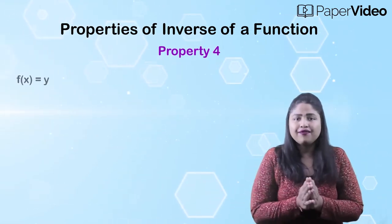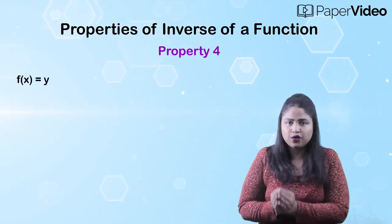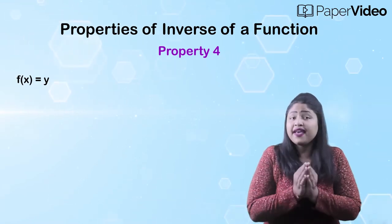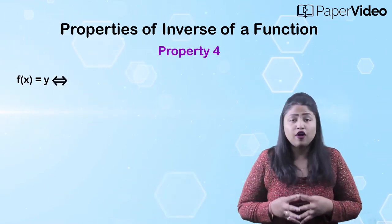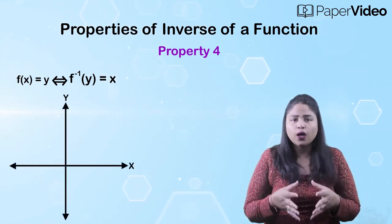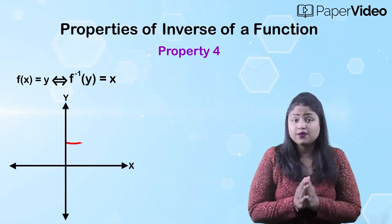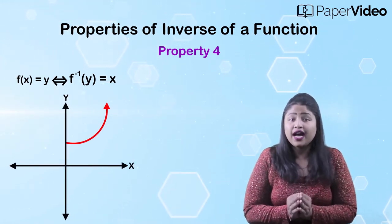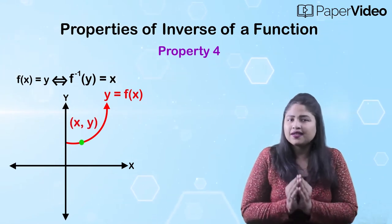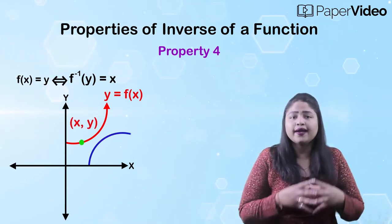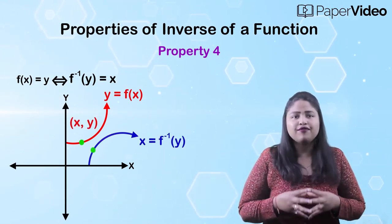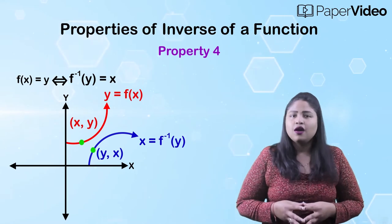According to the fourth property, f of x equals y if and only if f inverse of y equals x. This means that the ordered pair (x, y) is on the graph of the function f, if and only if the ordered pair (y, x) is on the graph of the function f inverse.